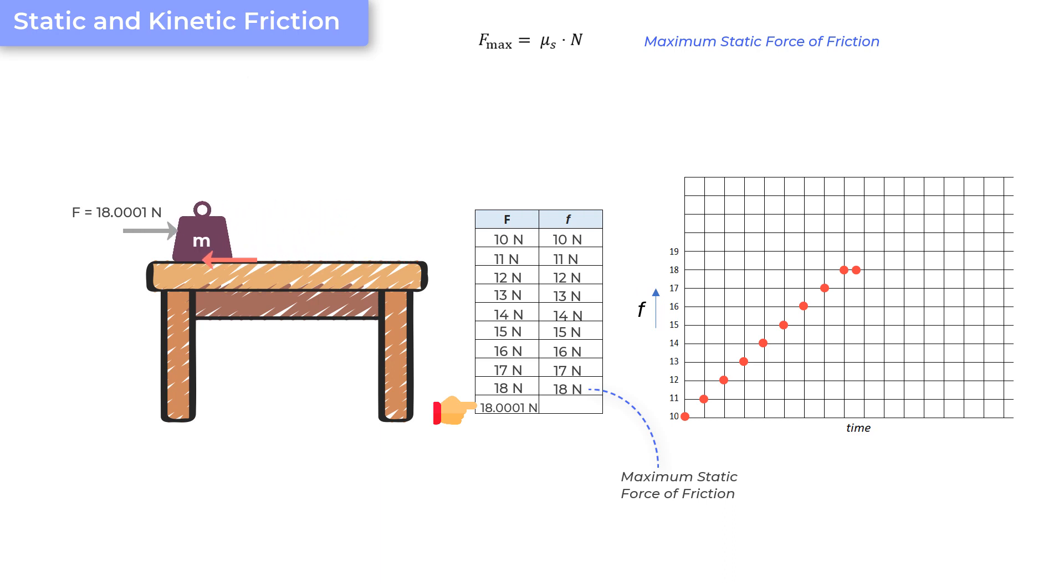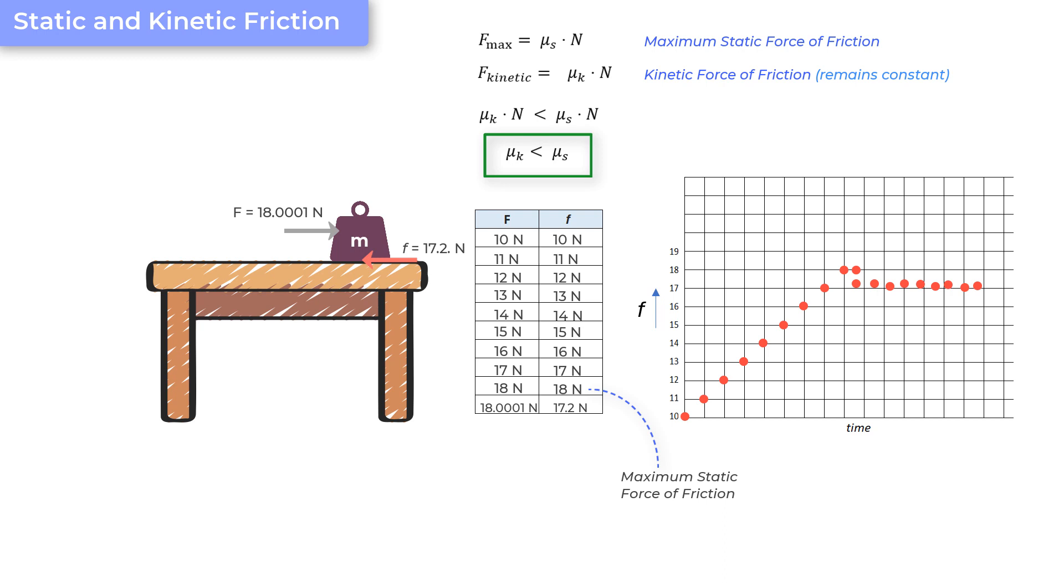Now, once a box starts moving, the force of friction reduces. And therefore, we now use a different coefficient of friction to calculate the friction acting on the box. And thankfully, this friction remains more or less constant and is written as mu k into the normal reaction, where mu k is the kinetic coefficient of friction. And we call it kinetic because kinetic pertains to movement. And since this force is less than this force, mu k is always less than mu s. So, now you know the reason as to why, if you try to push a table, the initial force required to push is more than the force required to keep it moving.